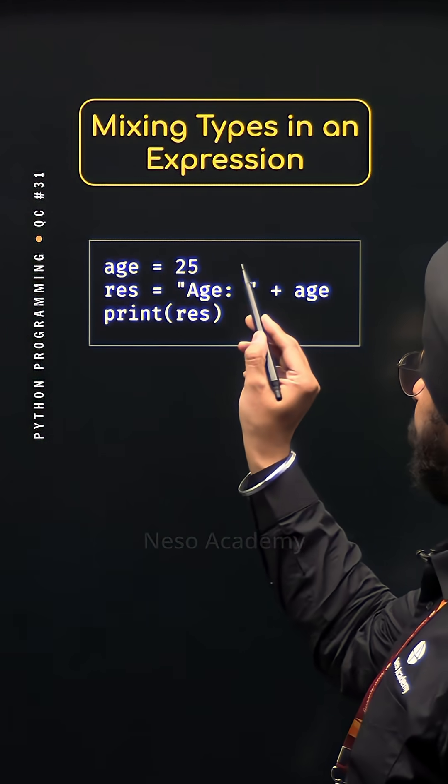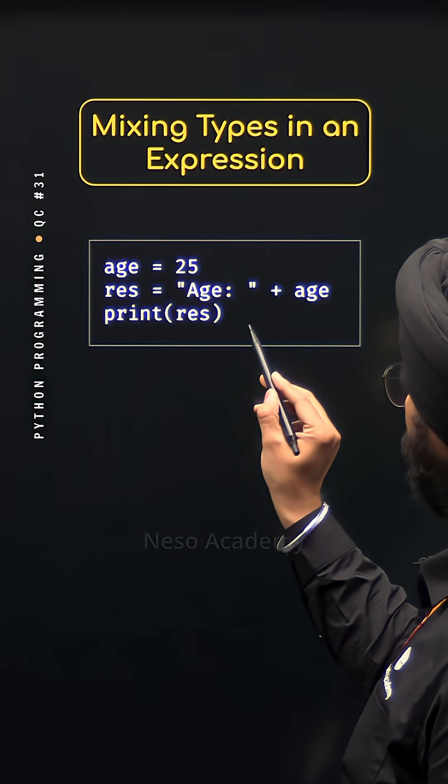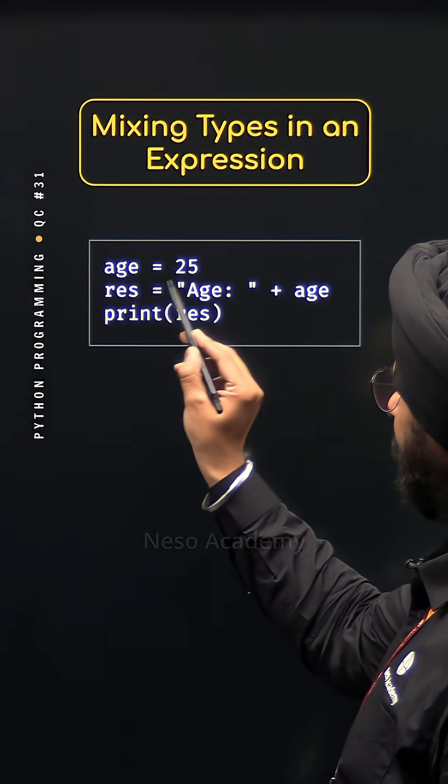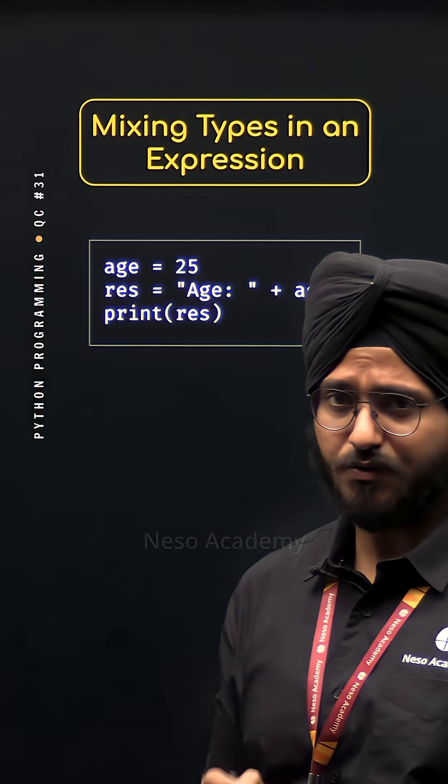age variable is pointing to this value 25 and here we are trying to add this string with this value and we are storing the result in the res variable and then we are printing the result. What do you think? What is the output of this program?